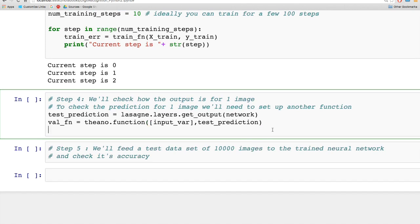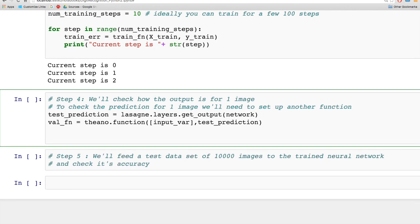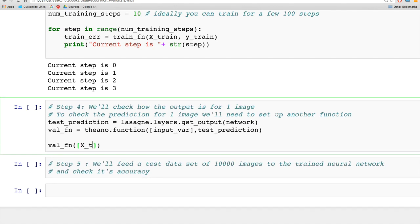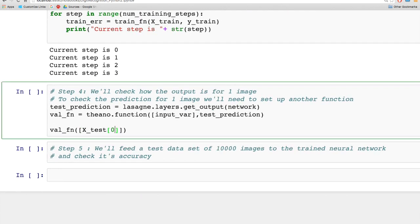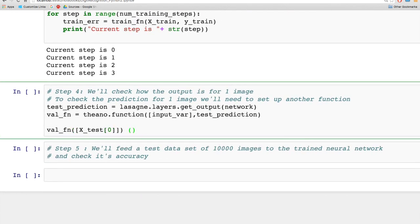When we downloaded the images database from MNIST, we had two sets of images: a training set and a test set. We'll pass the first image in the test set to this function and see what the output is.